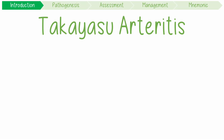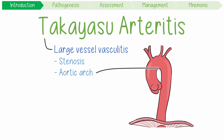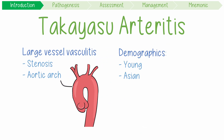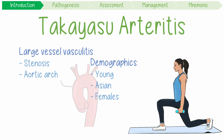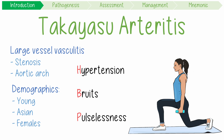Takayasu arteritis, or TAK for short, is a large vessel vasculitis which causes narrowing or stenosis of the big arteries of the aortic arch. It classically affects young Asian women and manifests with high blood pressure — my acronym for hypertension — bruits, and upper limb pulselessness.